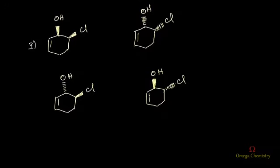Now we have cyclohexene derivatives here. In this first compound, the alkyl group and Cl are pointing in the same direction — that is, above the plane. Since they are pointing in the same direction, we call this exo.